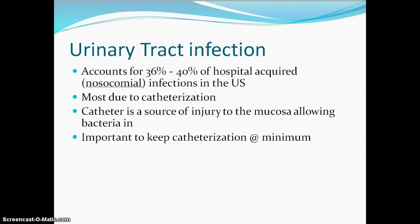Urinary tract infections acquired in the hospital have not been reimbursed by Medicare or Medicaid since 2008 because they're considered preventable. Looking at the cost, we really need to do a good job preventing UTIs — we often get a UA on admission just to show that the patient came in with the infection and we didn't cause it. It's the most common healthcare-acquired infection: 80% according to Potter and Perry come from indwelling catheters, with 1 million UTIs in the U.S. each year.